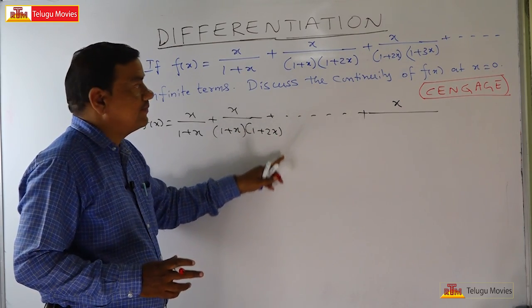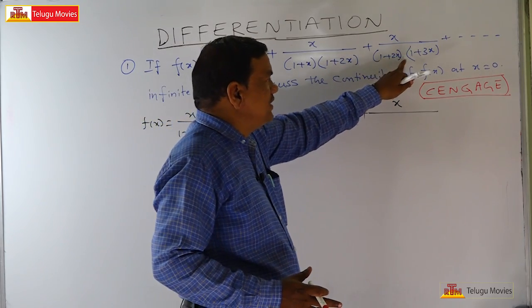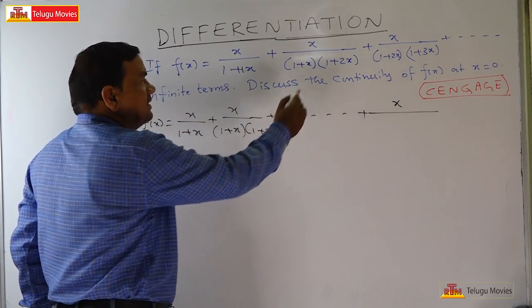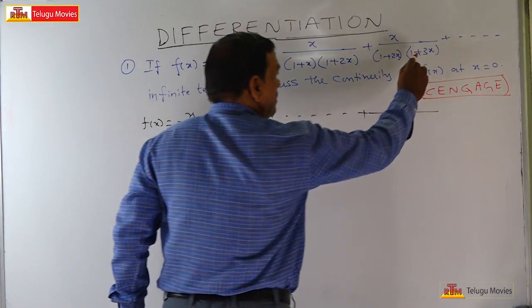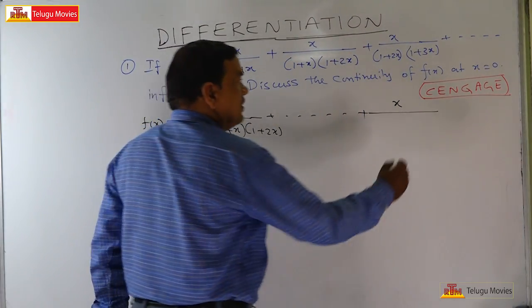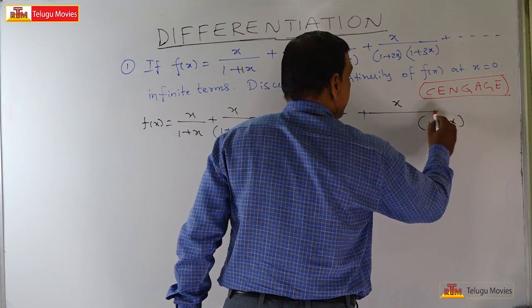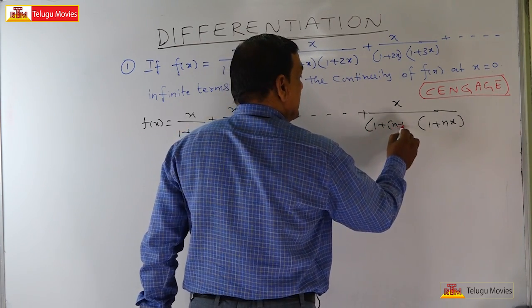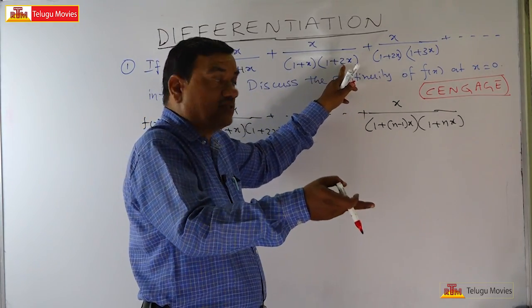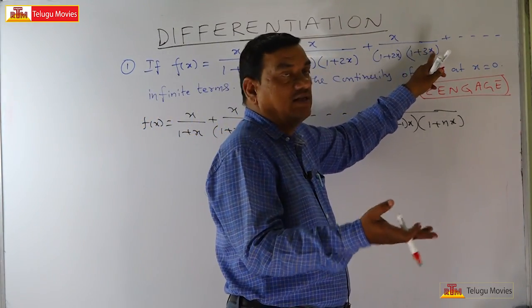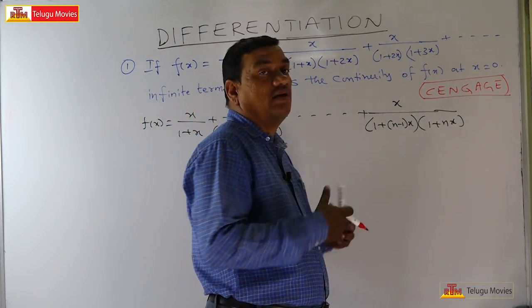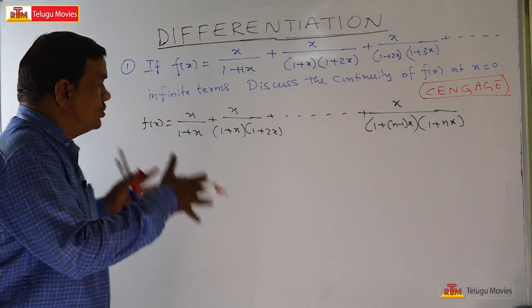The second term has (1+2x)(1+3x), the third term has (1+2x). So the pattern is: first term has 1x, second term 2x, third term 3x. Therefore the nth term will be x / ((1+（n-1)x)(1+nx)).